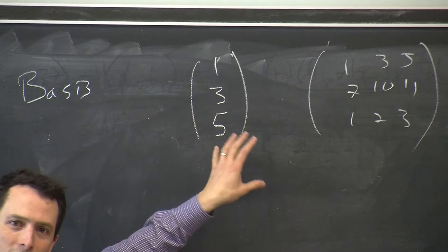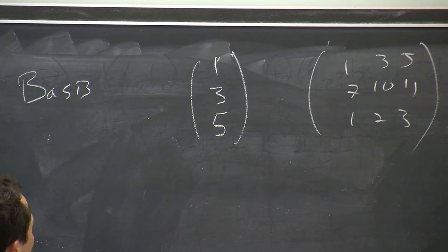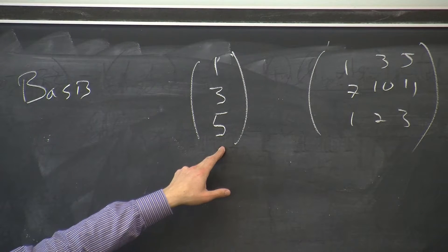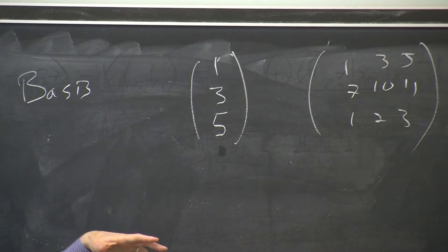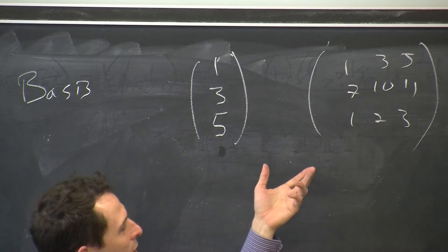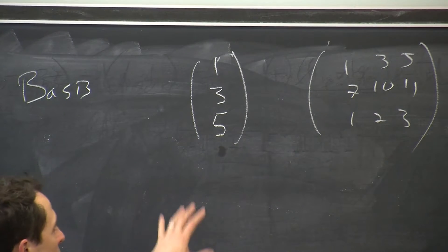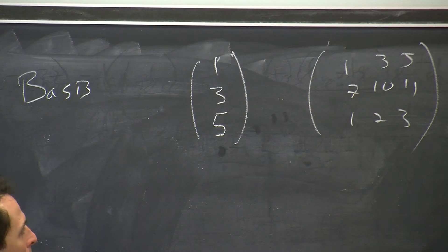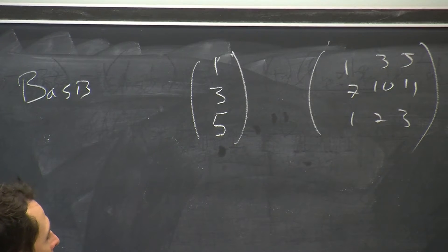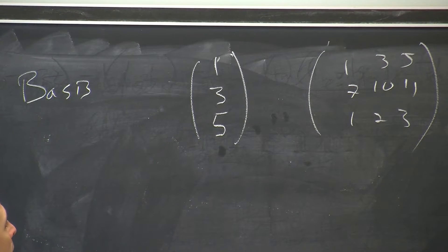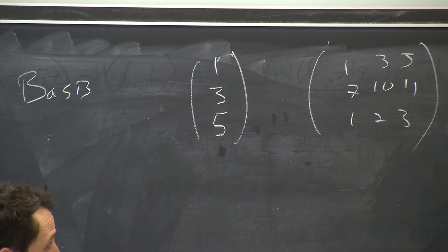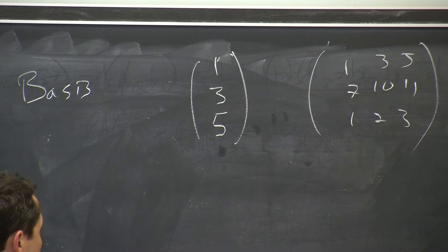We're thinking about bases from the other direction: we give axioms such that something is a basis, and those axioms can be used to prove that certain things are a basis. One cost of starting the matrix-first way is that it's efficient and you can immediately make computations, but one of the big costs is that change of bases gets a little confusing, and distinguishing a matrix from a linear transformation gets even more confusing.